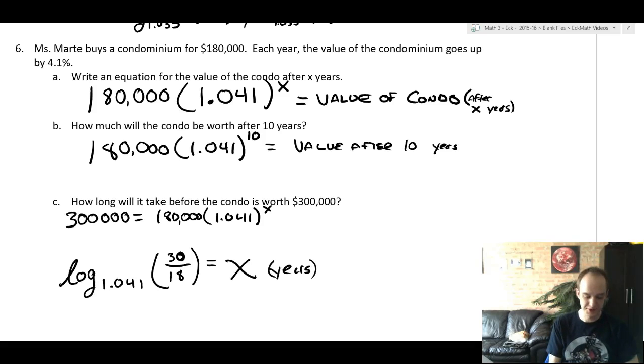And here's our answers to the last problem. Setup: 10 years is plug in 10 for x. And the last one, how long is it going to take to be worth 300,000? Notice that when you divide by 180,000, you are totally allowed to just cross out, cancel out four of the zeros. You don't have to carry all of those through. So 30 over 18 will give you the same answer as 300,000 divided by 180,000. And it's a lot easier to write.